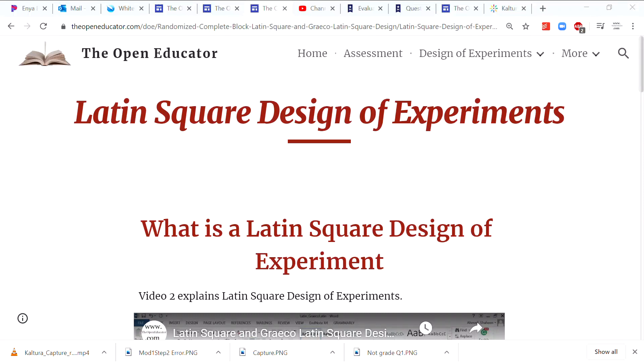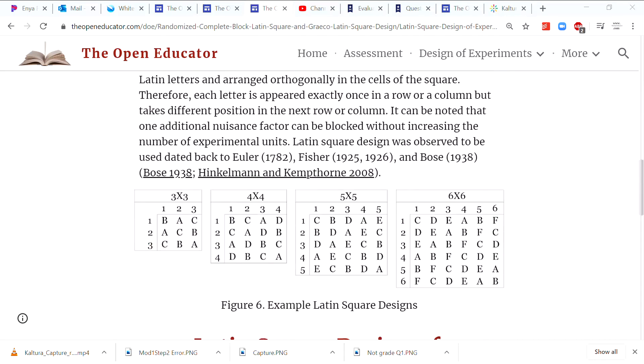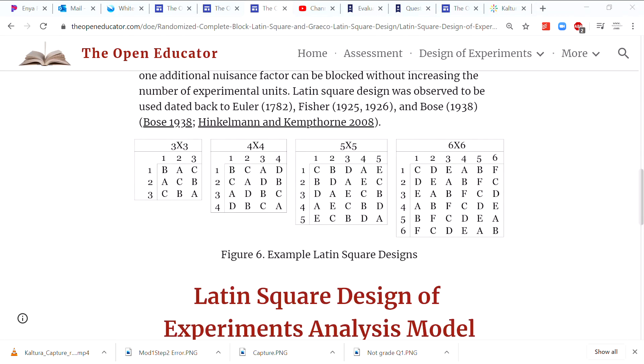Latin square design is a type of block design, and therefore the goal is to reduce the experimental error. Now what is Latin square? It's a square design either 3 by 3, 4 by 4, 5 by 5, 6 by 6, or 2 by 2. It looks like a square and it's made of Latin letters.